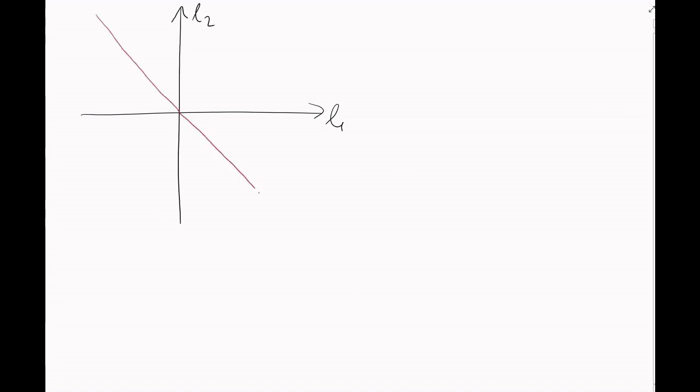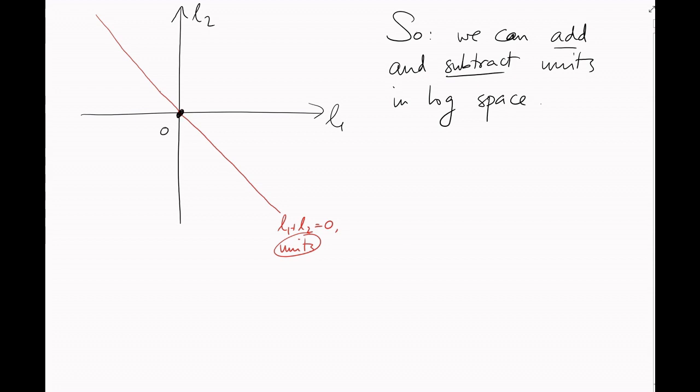So if we know a few of the units in logarithm space, we can add or subtract them to get more units. For example, if we know a unit u, say here, then u squared is here, u cubed is here, u to the 4, and so on. And we have u to the minus 1, u to the minus 2.